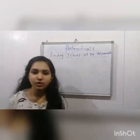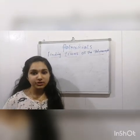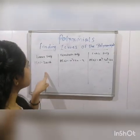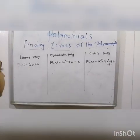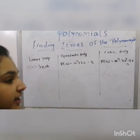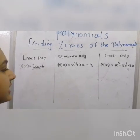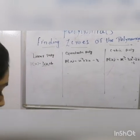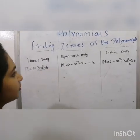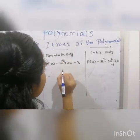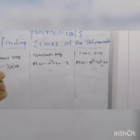We all know that the term polynomials means many terms. They are classified as linear polynomials, quadratic polynomials, and cubic polynomials. The letter x is known as a variable because it varies every time. The number we see before x is known as a constant or coefficient. The highest power for a linear polynomial is 1, for a quadratic polynomial it is 2, and for a cubic polynomial it is 3.